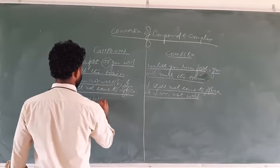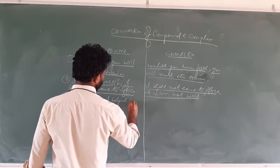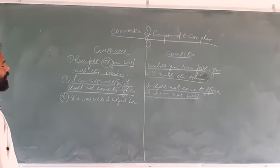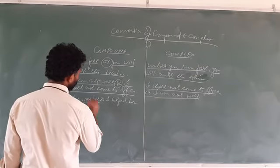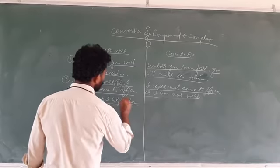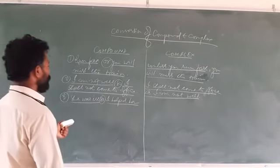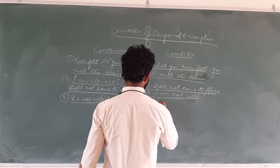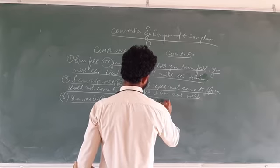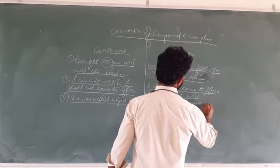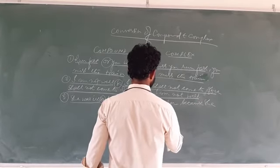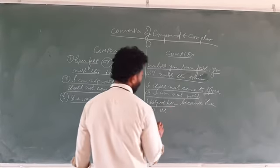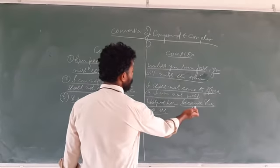Let us find another example. The compound sentence is: 'She was ill, so I helped her.' There are two independent clauses — 'she was ill' and 'I helped her' — and 'so' is the coordinating conjunction. We need to convert this into a complex sentence: 'I helped her because she was ill.' Here 'I helped her' is the principal clause, and 'because she was ill' is the subordinate clause — it is an adverb clause of reason.